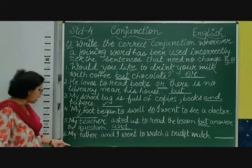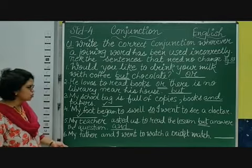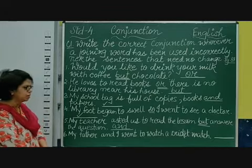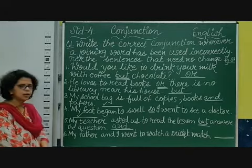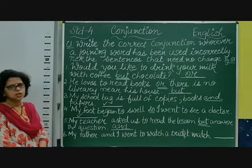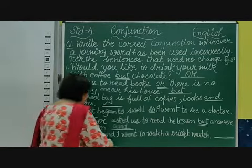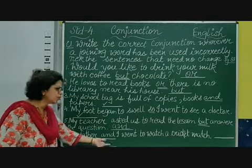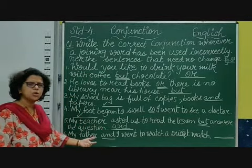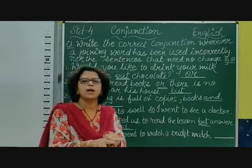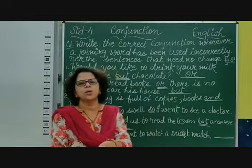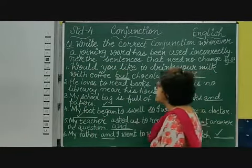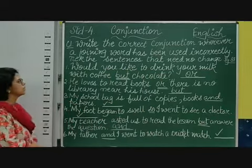Last sentence: 'My father and I went to watch a cricket match.' The conjunction is 'and'. My father went to watch the cricket match; I went to watch the cricket match — both ideas are the same, so they are joined by 'and'. This is correct, so we put a tick.